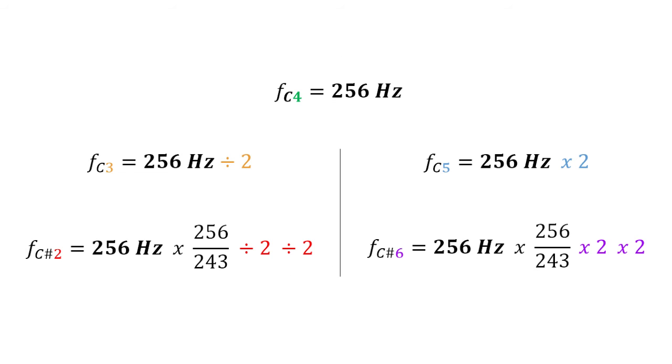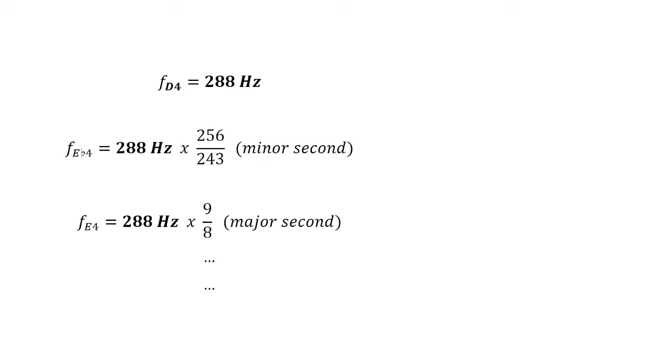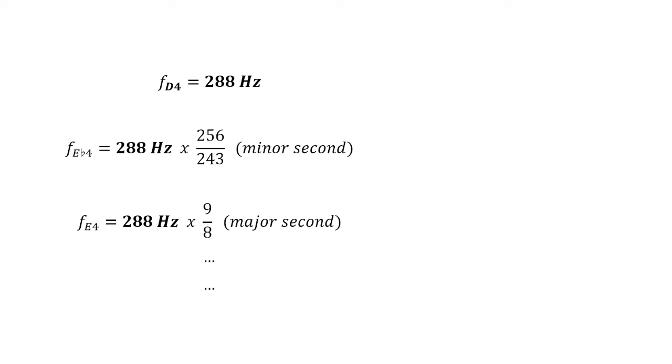Once you have a complete octave, you can find the frequencies of the notes in the rest of the octaves by adding a multiplication or division between the calculation for each additional octave upwards or downwards, respectively. Some frequencies will be different depending on the note you start with. For example, if we calculate the frequencies based in D, the frequencies of A-flat and C-sharp are different.